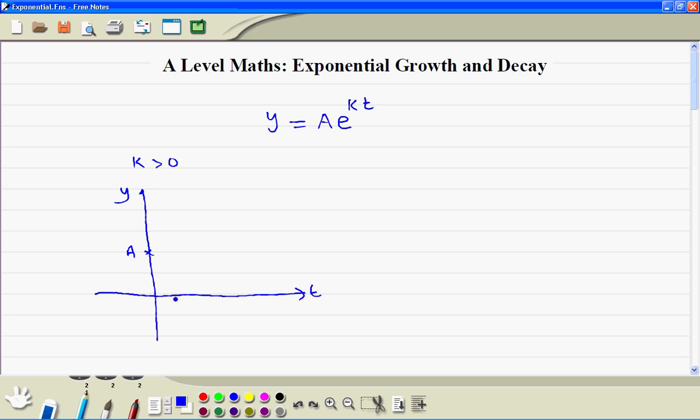So we will only have the right hand side of the graph from here. t cannot be negative because k is greater than 0, so it is exponential growth. So the graph would look like this, it will go up exponentially. So this is exponential growth.